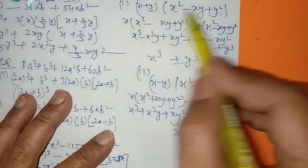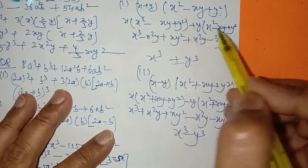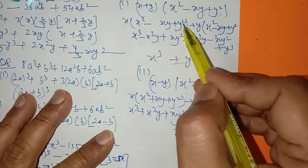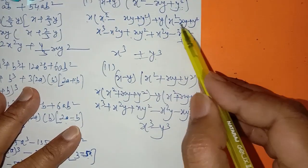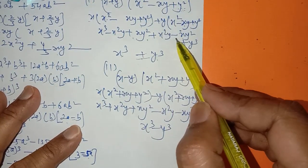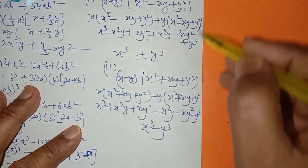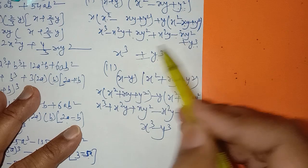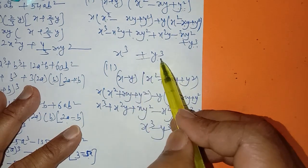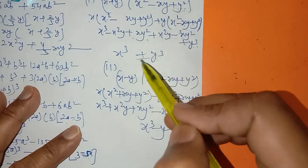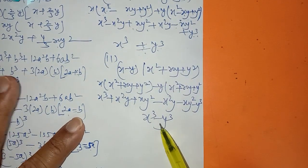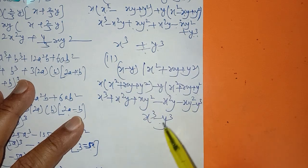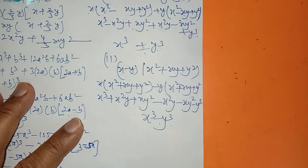x into all three terms gives x³, x²y, and xy². Then y into x² gives x²y, y into xy gives xy², and y into y² gives y³. On simplifying, all middle terms cancel out, leaving x³ plus y³. Similarly for x³ minus y³: multiply (x minus y)(x² plus xy plus y²), and simplified all terms cancel except x³ minus y³.